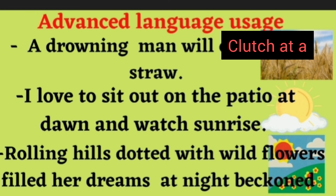'Rolling hills dotted with flowers filled her dreams at night, beckoned.' Beckoned means to wave or attract one's attention. The meaning: hills filled with flowers at nighttime filled her dreams and beckoned — meaning attracted her attention. The overall meaning of this sentence is that flower-filled rolling hills appeared in her dreams and drew her gaze.